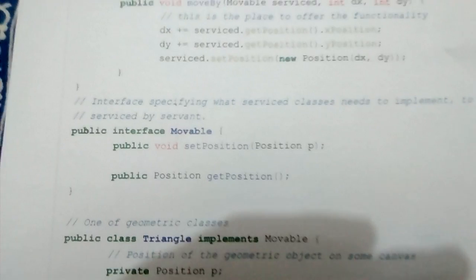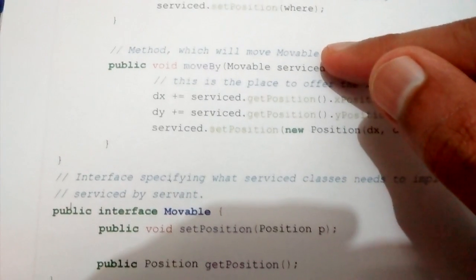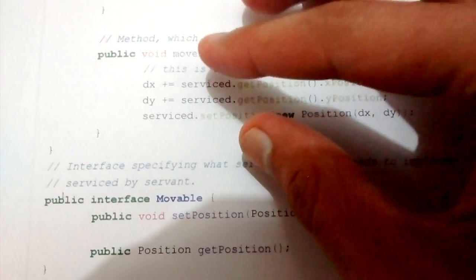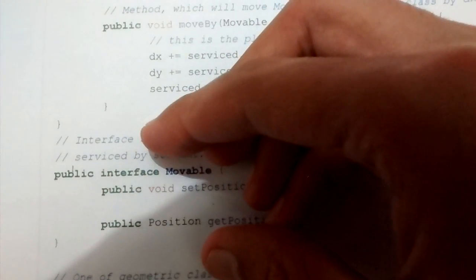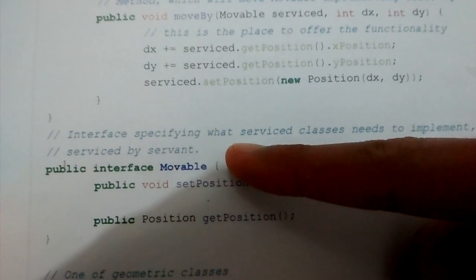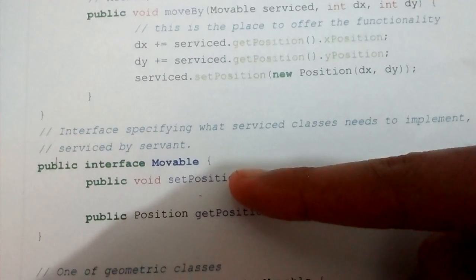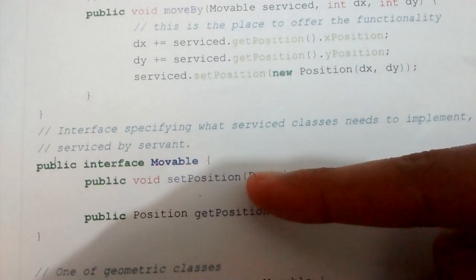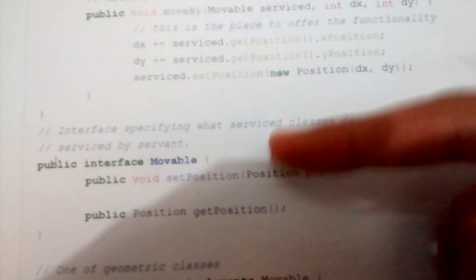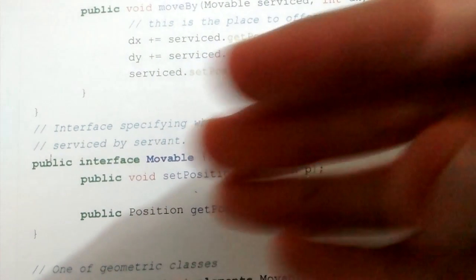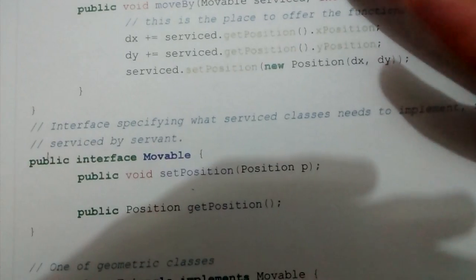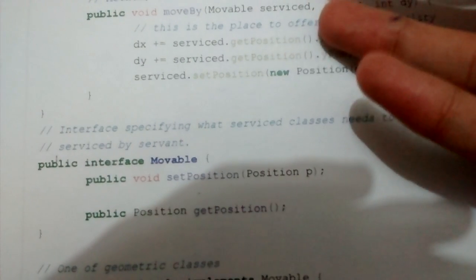Now look at the movable interface. This is the interface which is known to the servant. The servant knows that it is providing service to classes which implement this movable interface. So the servant knows only about this movable interface, and it knows that the movable interface declares a setPosition method and a getPosition method. Whatever objects it is providing service to must define a setPosition method, which it can use to set their position.